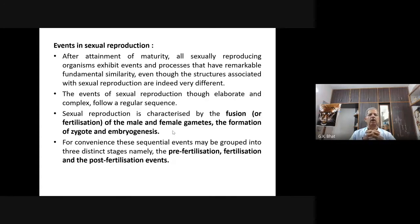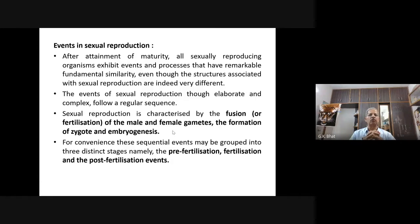In the last class, we studied very clearly how different sexual reproduction is from asexual reproduction. Whether it is sexual or asexual reproduction, for the reproduction purpose, the organism should reach maturity. After attainment of maturity, all sexually reproducing organisms exhibit events and processes that have remarkable fundamental similarities, even though the structures associated with sexual reproduction are indeed very different. If you look into the structures associated with sexual reproduction, they are found to be different in different organisms.